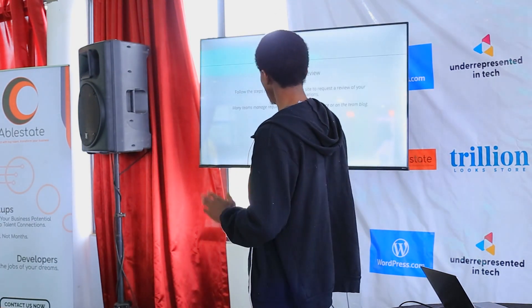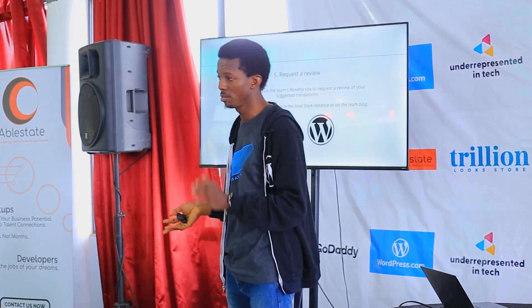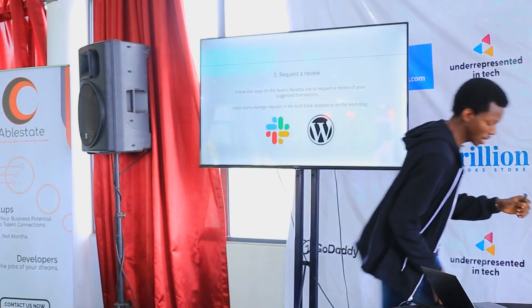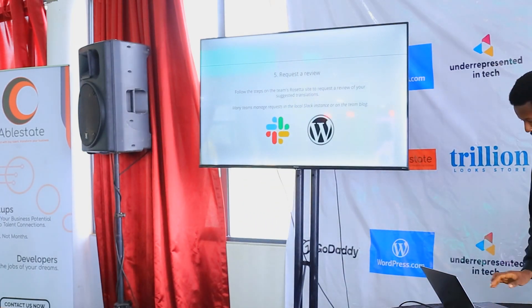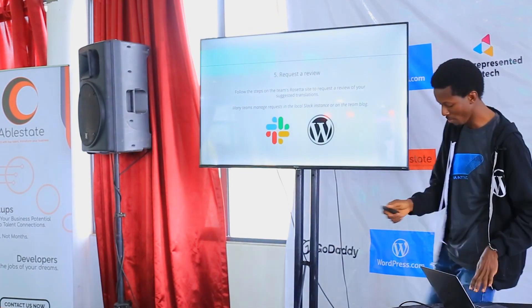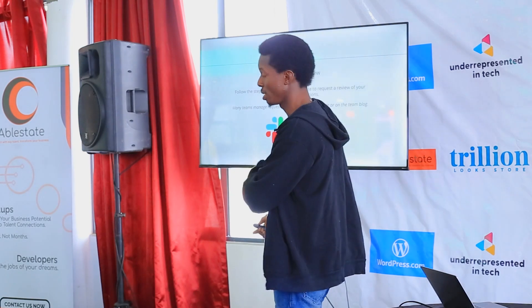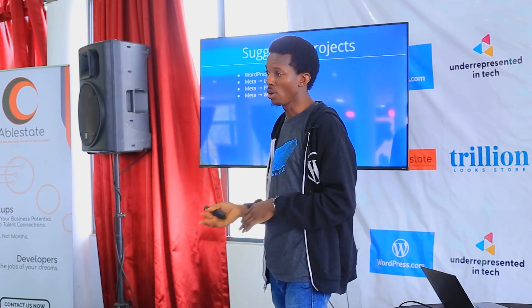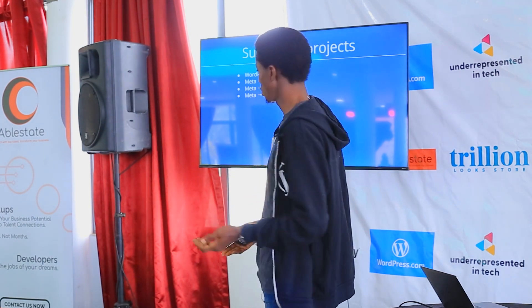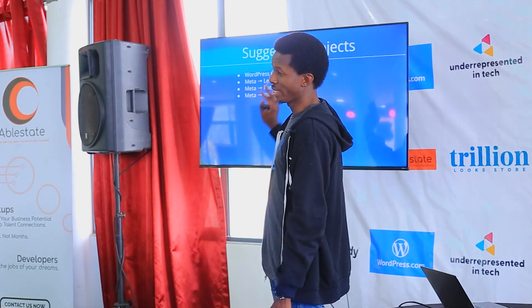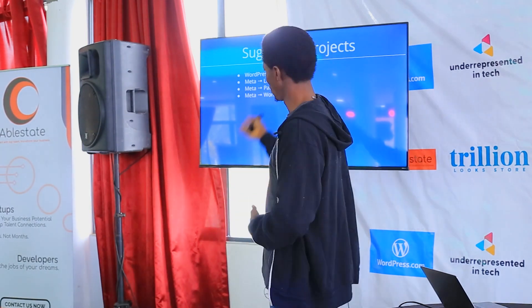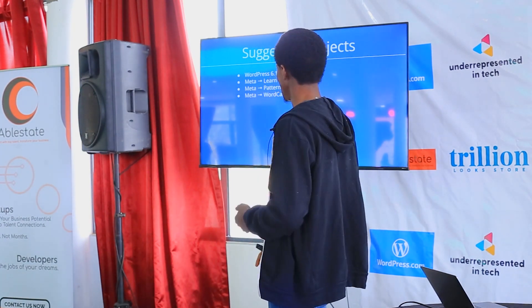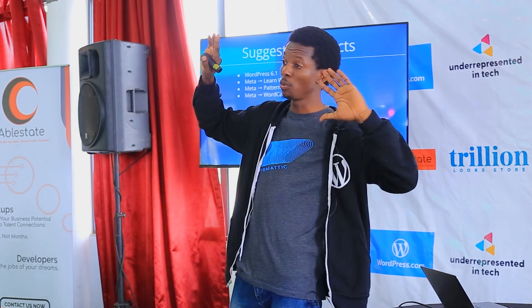You request a review, and for every locale there's a Slack channel to join. There are several projects on translate.wordpress.org to contribute to, and we're encouraged to translate the main WordPress project. At the time these slides were created, that was WordPress 6.1. You can choose to translate the entire WordPress project itself.